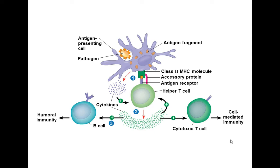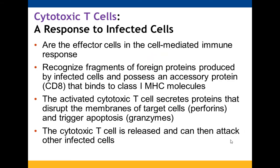Antigen-presenting cells include professional ones — macrophages and dendritic cells, and potentially B-cells. An antigen fragment taken from an attacking pathogen gets sent to the cell membrane, attached to the MHC molecule, and presented to the helper T-cell. Signals cause the T-cell to activate and clone itself; cytokines then activate B-cells and cytotoxic T-cells, enabling both humoral and cell-mediated immunity.